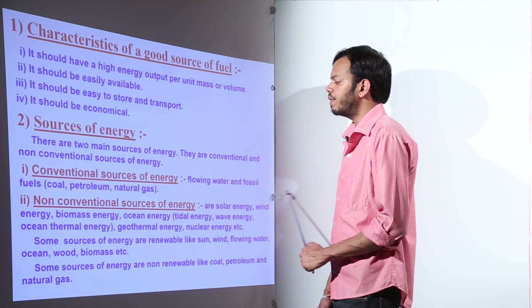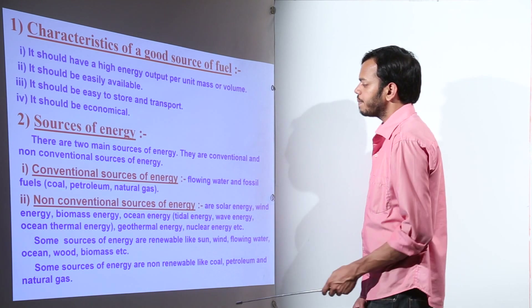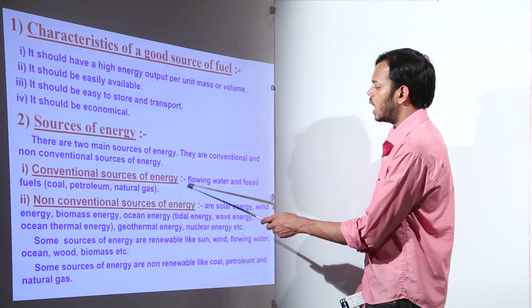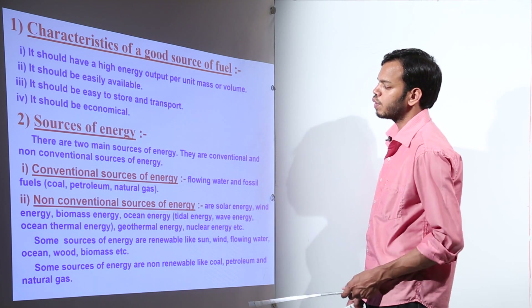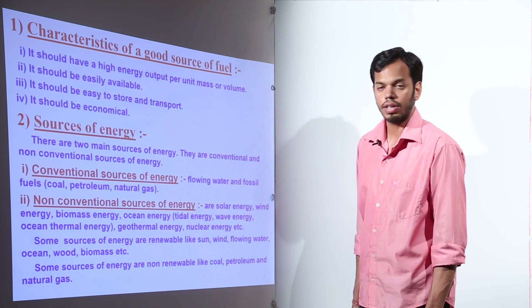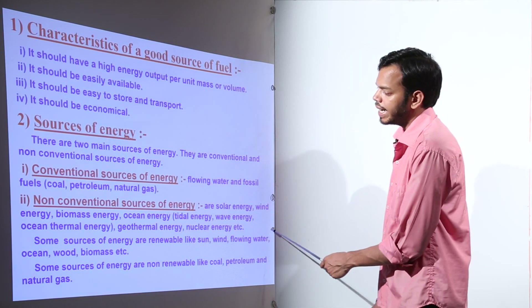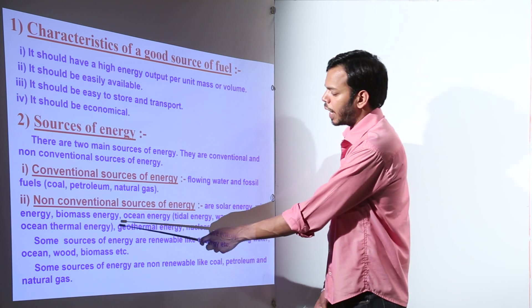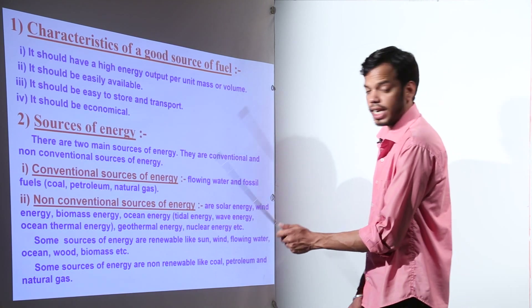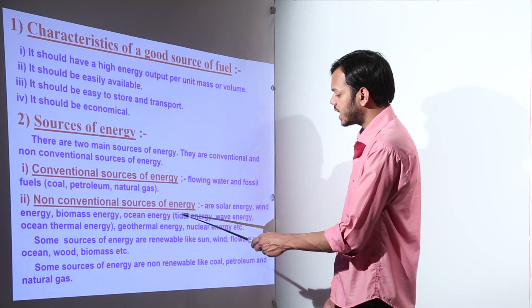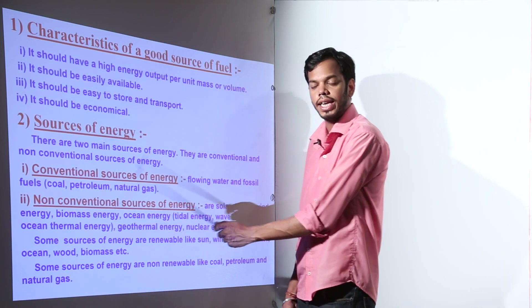Non-conventional sources are those sources of energy which we can harness indirectly — we have to use techniques to get the energy out of them. The conventional sources include flowing water, fossil fuels, coal, petroleum, and natural gas, whereas non-conventional sources are solar energy, wind energy, biomass, and ocean energy. Ocean energy itself contains tidal energy, wave energy, and ocean thermal energy.